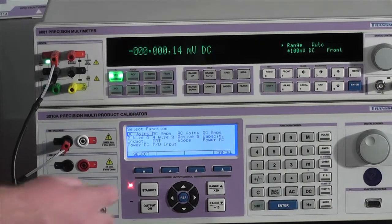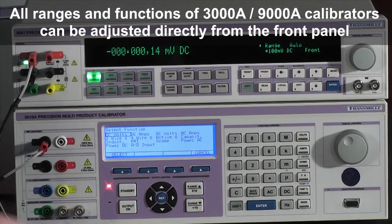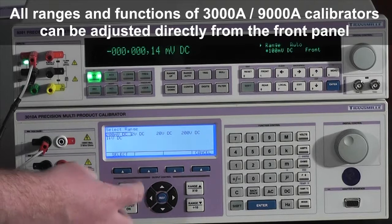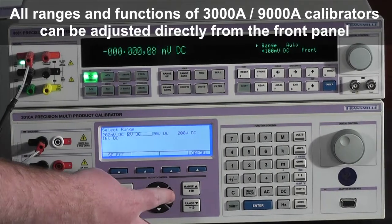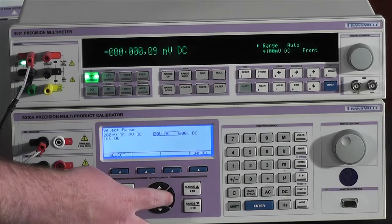The large screen shows all of the parameters that can be adjusted, for example, DC voltage. We now have a menu showing the ranges that we can adjust. Let's select 20V.